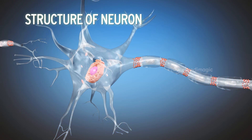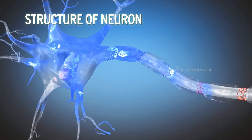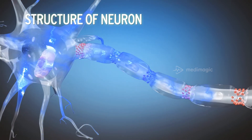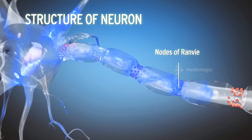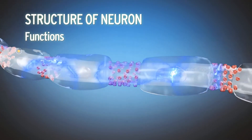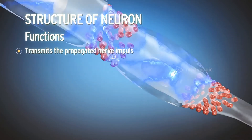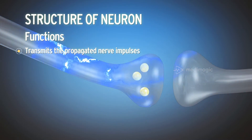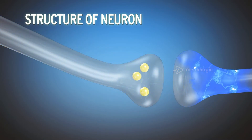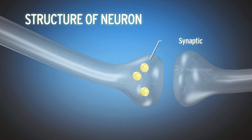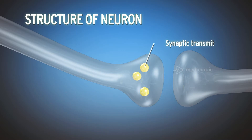A protein layer envelops the axon, known as the myelin sheath. At certain points, the myelin sheath constricts to produce nodes called nodes of Ranvier. The axon transmits propagated nerve impulses away from the cell body to the nerve endings. The axon branches at the terminus and bears knob-like structures called synaptic knobs, which contain granules or vesicles holding synaptic transmitters.